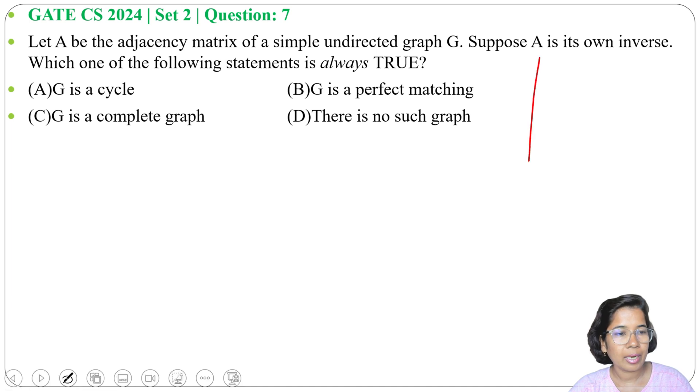Let me take an example. I am taking an adjacency matrix. Here we have four vertices A, B, C, D. Here A, B, C, D.